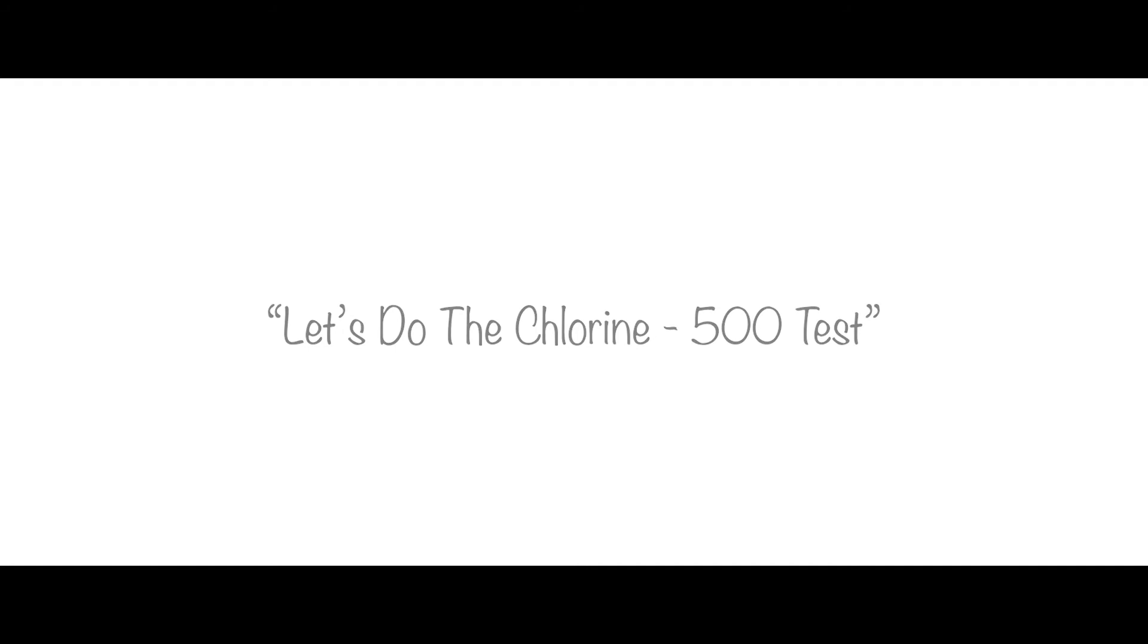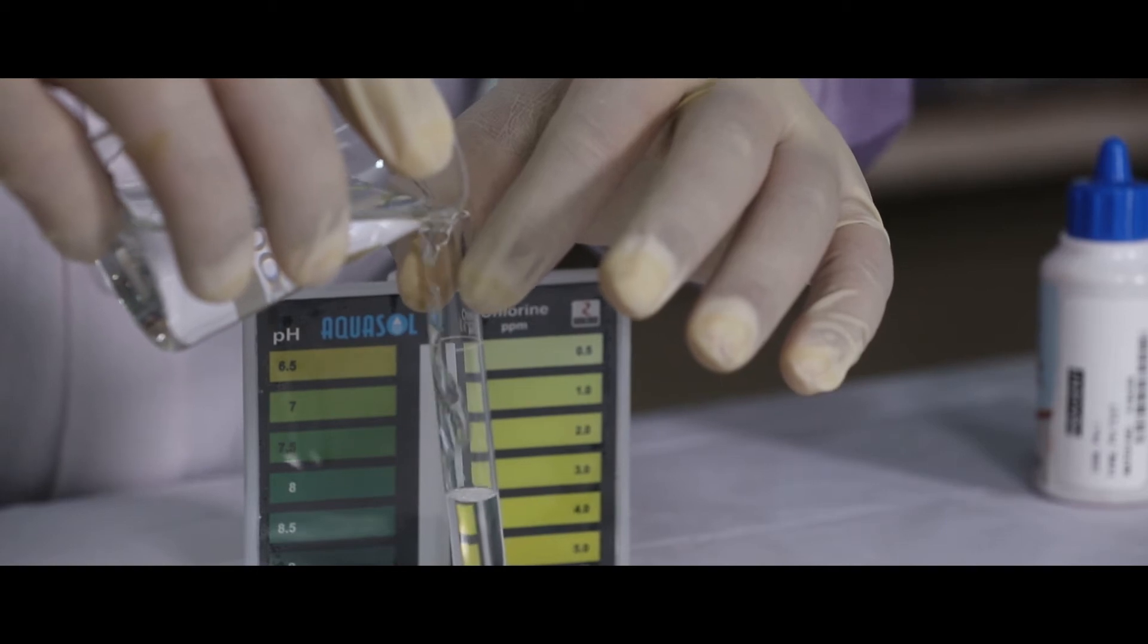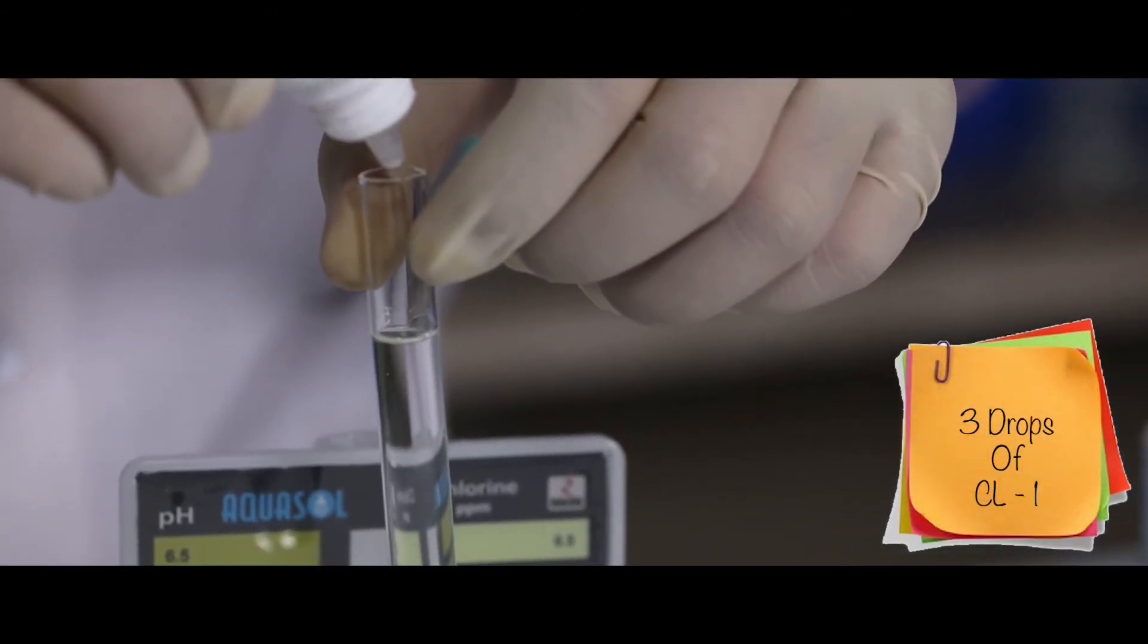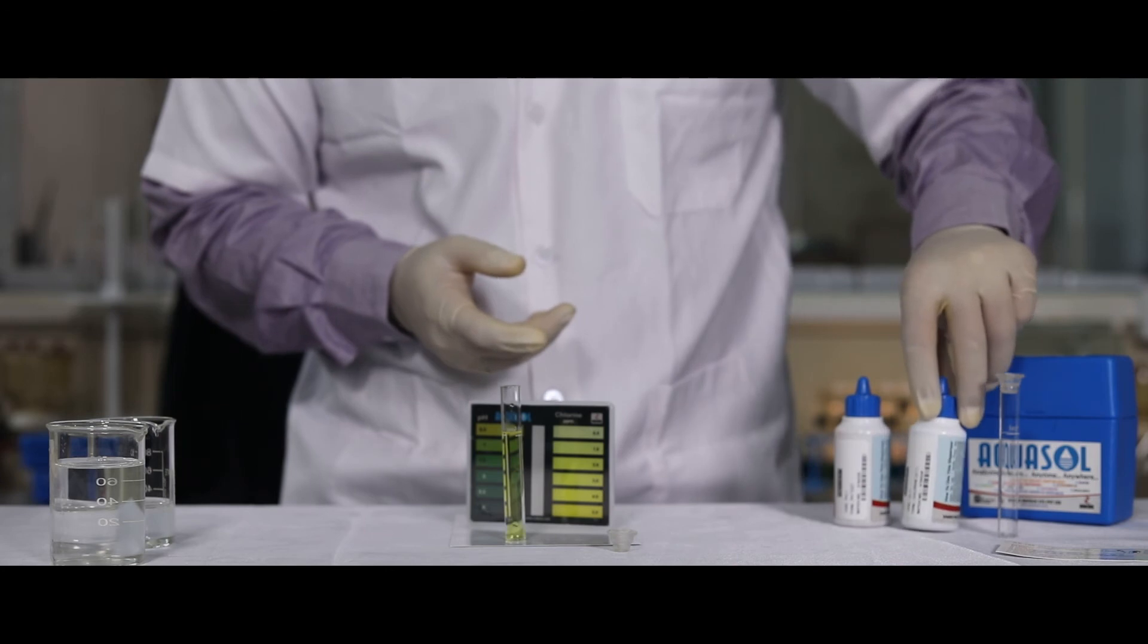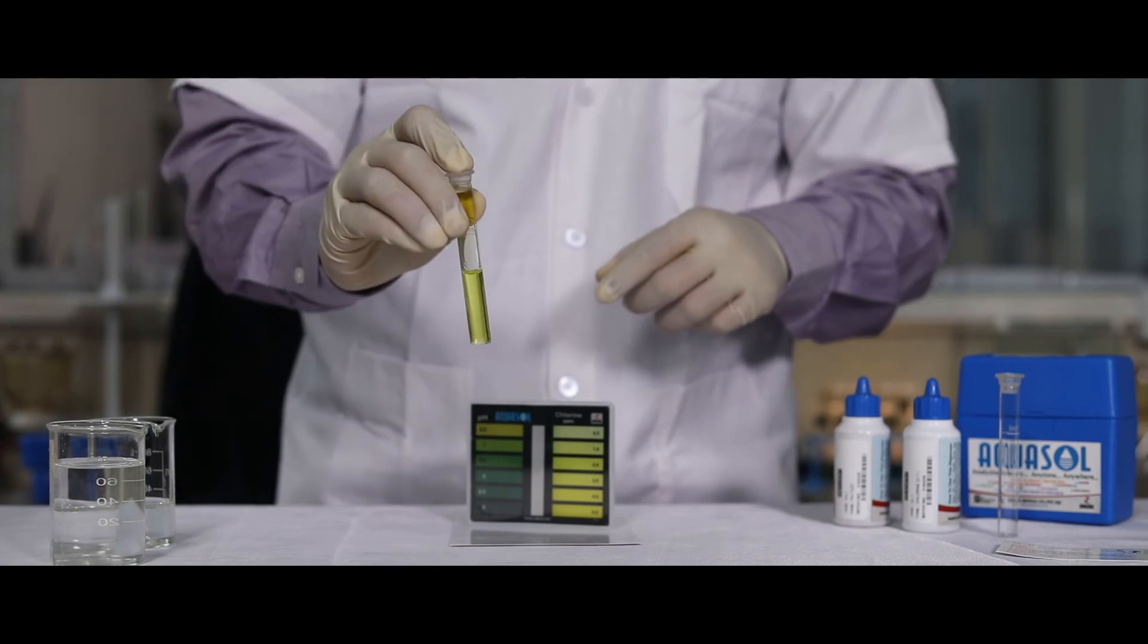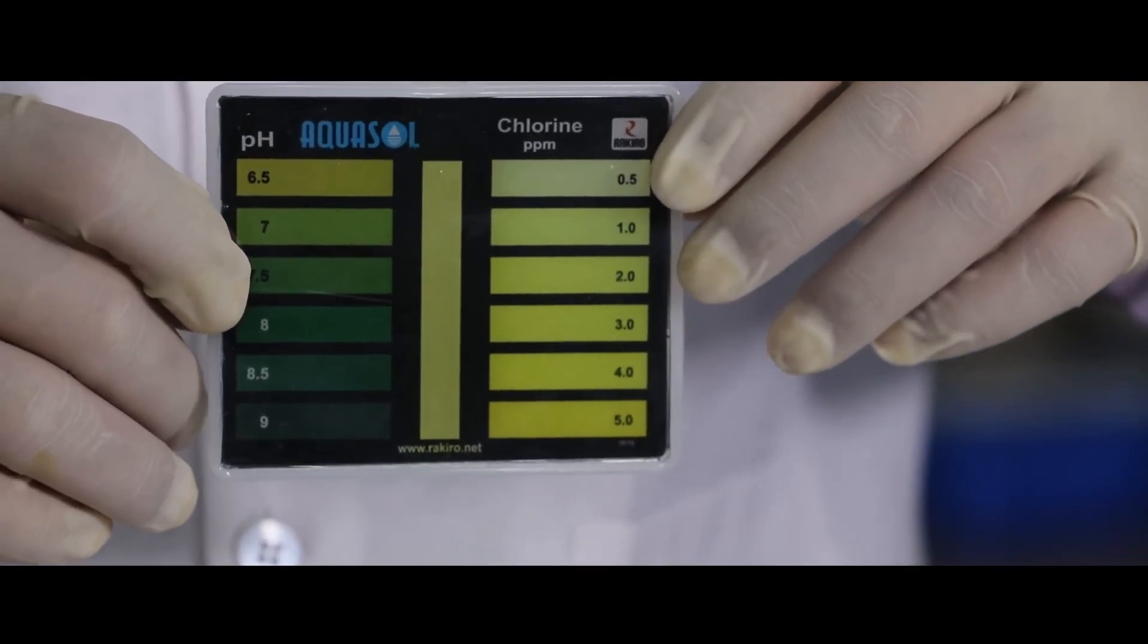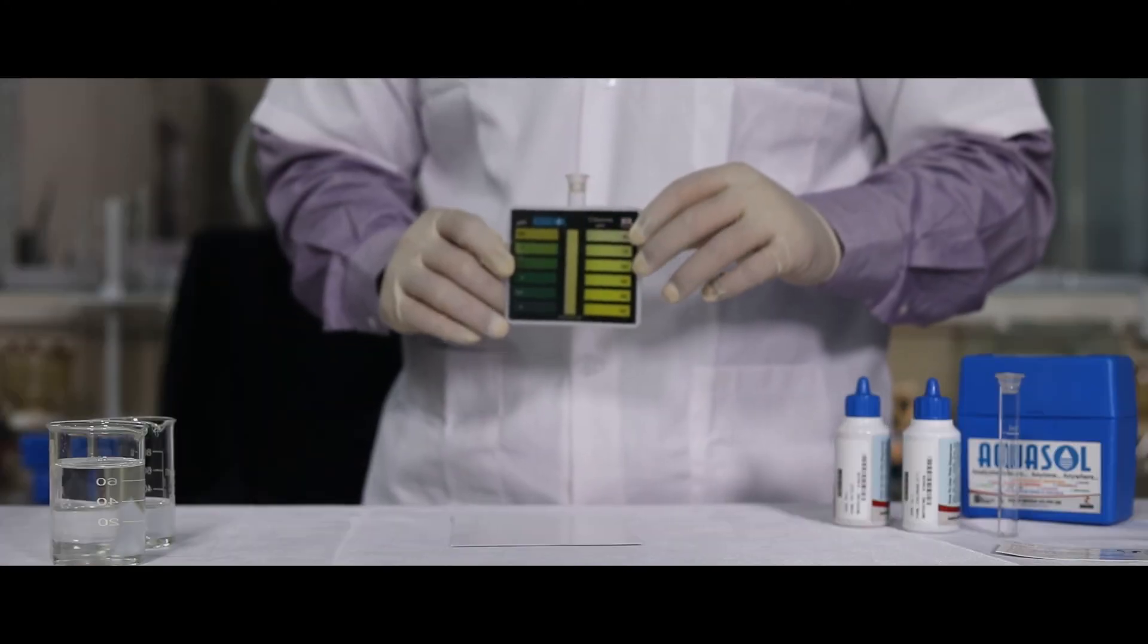For chlorine testing, fill the test tube with the sample till the mark and add 3 drops of chlorine Cl-1 reagent. Mix well. Place the test jar in the comparator slot and match the color to the color chart to know the value of chlorine present in the sample.